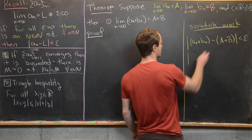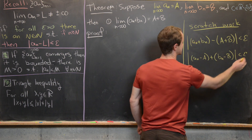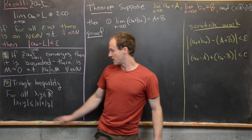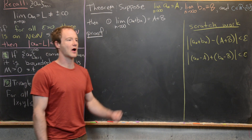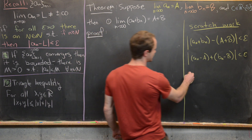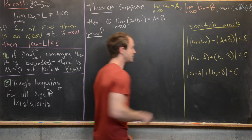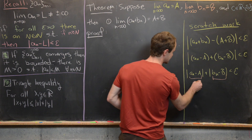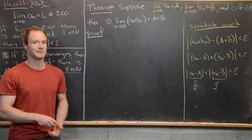We rearrange to |(aₙ − a) + (bₙ − b)| < epsilon, then apply the triangle inequality with x = aₙ − a and y = bₙ − b, giving |aₙ − a| + |bₙ − b| < epsilon. Since we know aₙ → a and bₙ → b, we can control each term — making each less than epsilon/2 so their sum is less than epsilon.